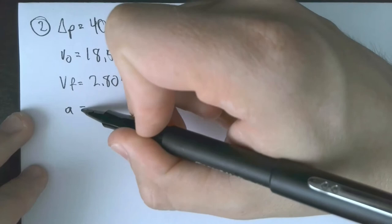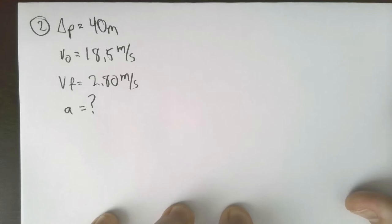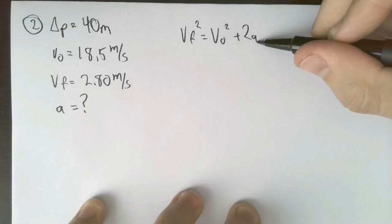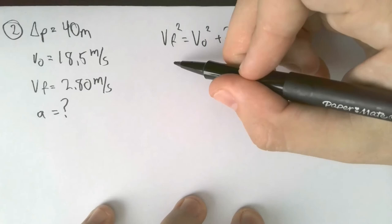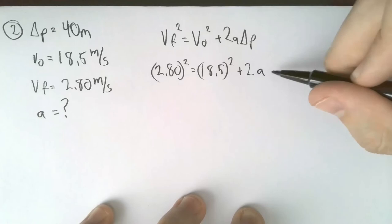It goes a distance of 40 meters - that's the same thing as displacement. Smoothly slowing down, it goes from this speed to this speed, so that means they are initial and final respectively. Finally, they ask us find the acceleration of the truck. Let's see if we can pick the equation. We got one, two, three, four. What's it going to be? Two, looking for two.